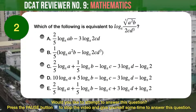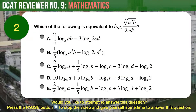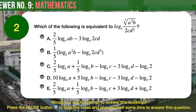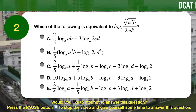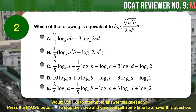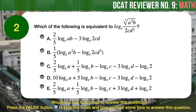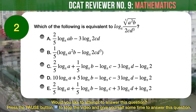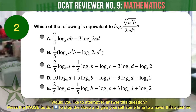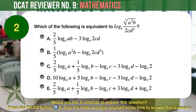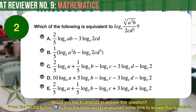Question number 2: Which of the following is equivalent to logarithm base x of the quantity — the fifth root of a squared times b, over 2cd cubed? Answer choice A: two-fifths times the logarithm base x of ab, minus three times the logarithm base x of 2cd. Answer choice B: one-fifth times the quantity, logarithm base x of a squared b, minus logarithm base x of 2cd cubed.